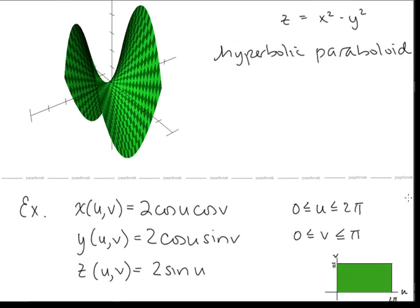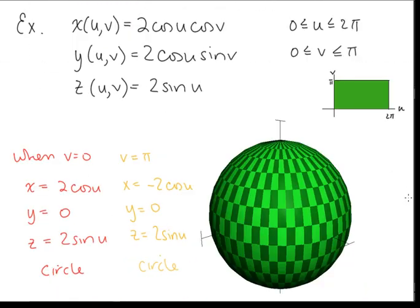This parametrization gives us a sphere centered at the origin of radius 2. I want to examine exactly how we're getting this mapping from this rectangle onto the sphere. When v equals 0, we get 2 cosine u times 1, a 0, and 2 sine u — so 2 cosine u, 2 sine u — that's going to be a circle in the xz plane.